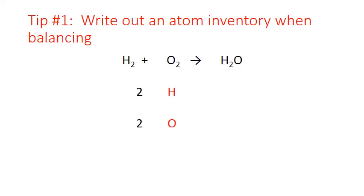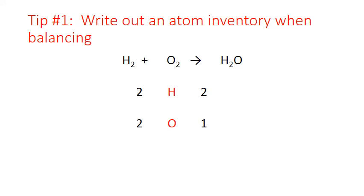You have to note what you have to begin with. On the left-hand side, the reactants, you have two of each in the molecular forms of those elements. On the right-hand side, in the water molecule, you have two atoms of hydrogen and one of oxygen. To balance this, you need to get the oxygen up to the same number on both sides. Coefficients placed in front of formulas multiply through that formula to get the same number of atoms on each side. So if you need to get oxygen on the product side up to two, place a two in front of the formula containing oxygen on the product side. That multiplies through: one times two equals two.